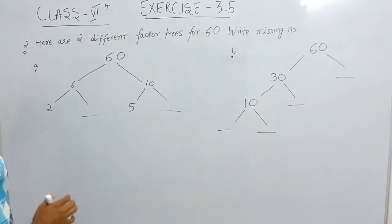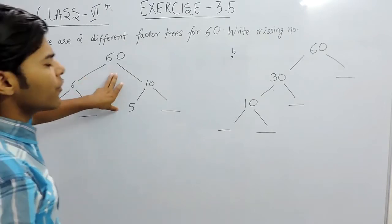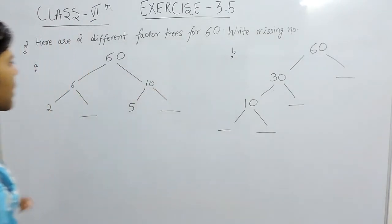Hello students, now we will solve the second question of exercise 3.5. Here the question says there are two different factor trees for 60 and we have to write the missing numbers.